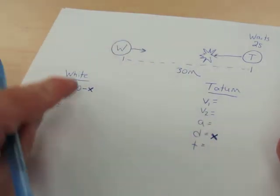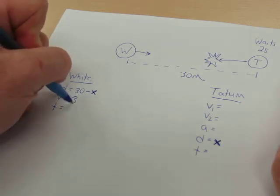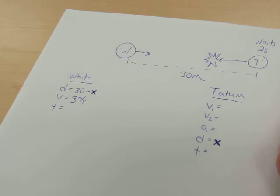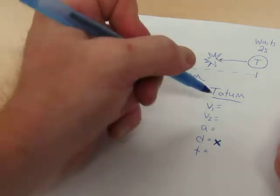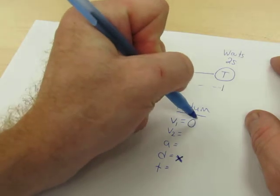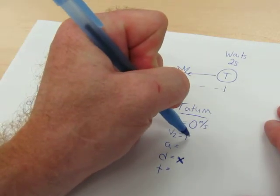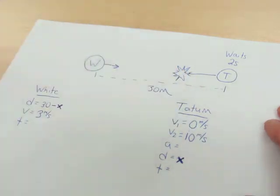Let's see what else the question says. White was already in motion and continued forward at a constant speed of three meters a second. So White's speed three meters a second. Tatum hesitated for two seconds before he runs, and then he accelerates head-on toward White from rest. So Tatum starts at V1 equals zero. That's always nice. How far did Tatum travel if he slammed into White at 10 meters a second? So that's his final speed. His V2 is 10 meters a second.